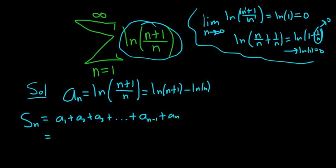Now we're carefully going to plug everything in. So let's see. a sub 1, that's going to be ln, 1 plus 1 is 2, so that's ln 2 minus ln 1. That's a sub 1. I'm putting it in parentheses. That's our first term.